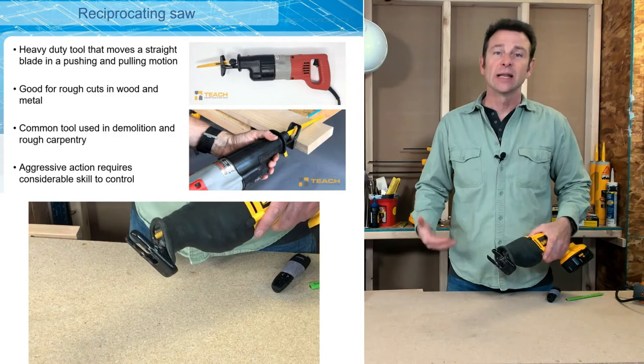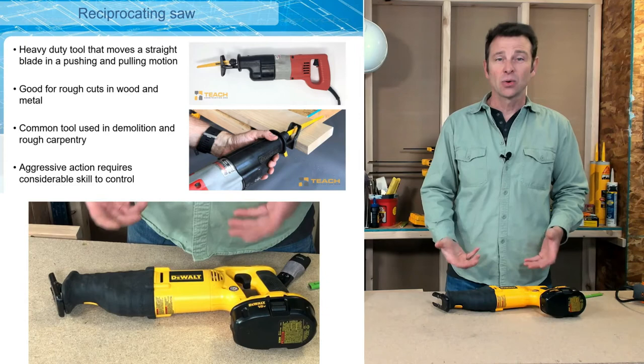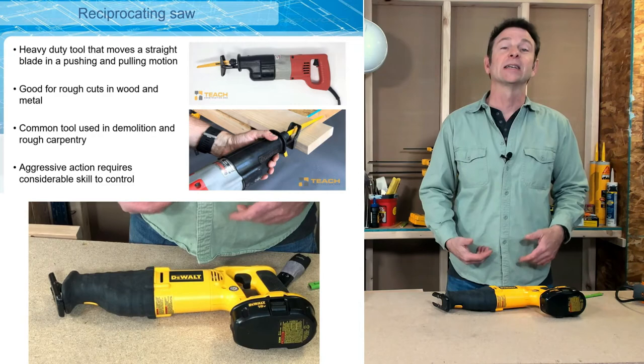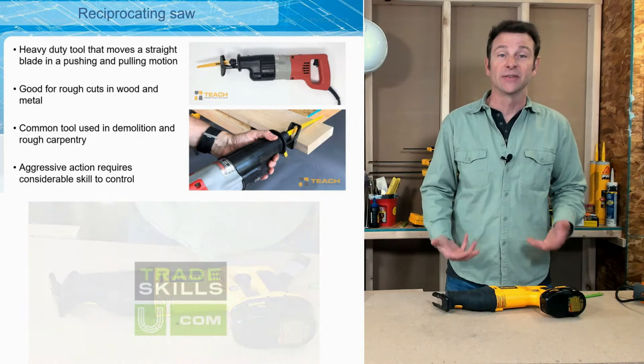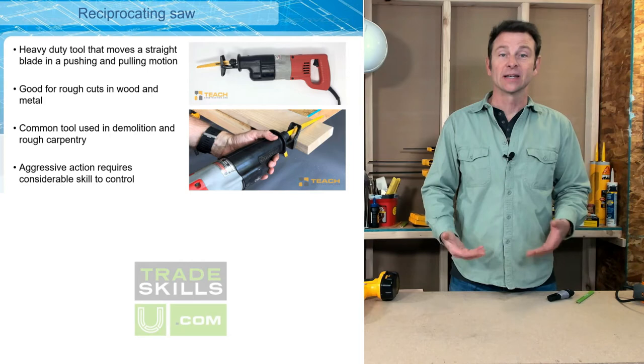That was a corded electric version. Here is a cordless, battery-operated reciprocating saw — same parts, same features, works the same way. The benefit of a cordless tool is obviously there is no cord in your way. The benefit of the corded tool is significantly more power, which helps when cutting through difficult materials. Check the link above to learn more about the details and workings of this specific power tool.